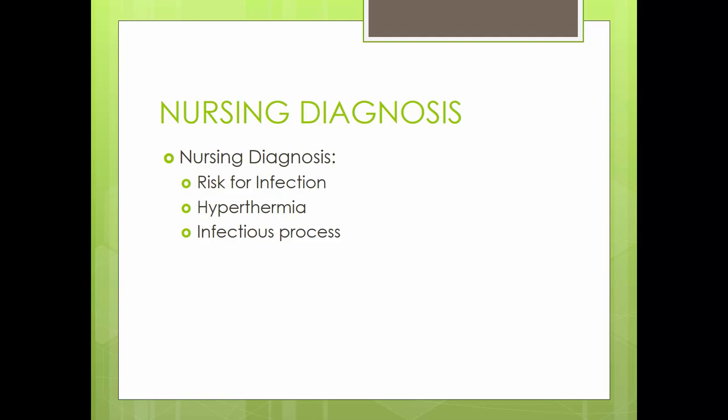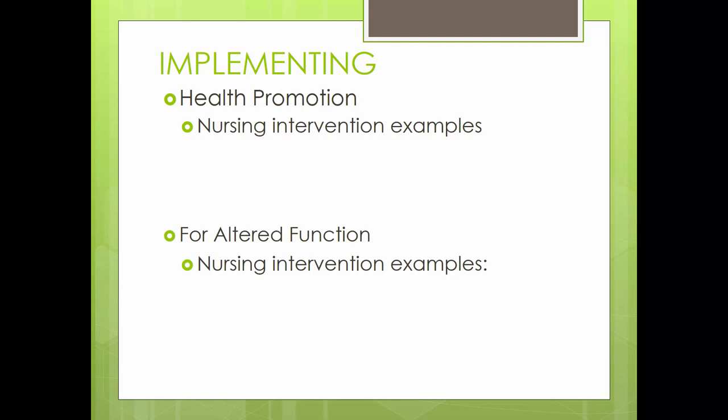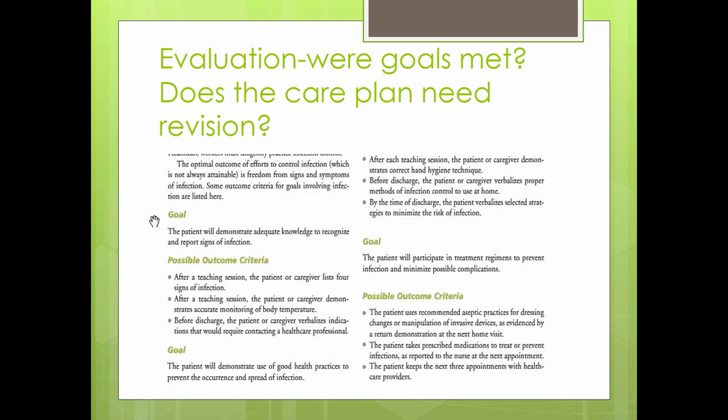After we assess, we cluster or group data together to form a nursing diagnosis. These are some possible diagnoses for infection. Next, we set the outcome and plan our nursing interventions, then implement them. These can focus on health promotion such as personal hygiene, rest, relaxation, or immunizations, or on altered function such as comfort measures and antimicrobial therapy. Finally, we evaluate the interventions and whether or not our goals were met — if not, just revise the care plan. This concludes our lecture on infection. Thanks and have a good day.